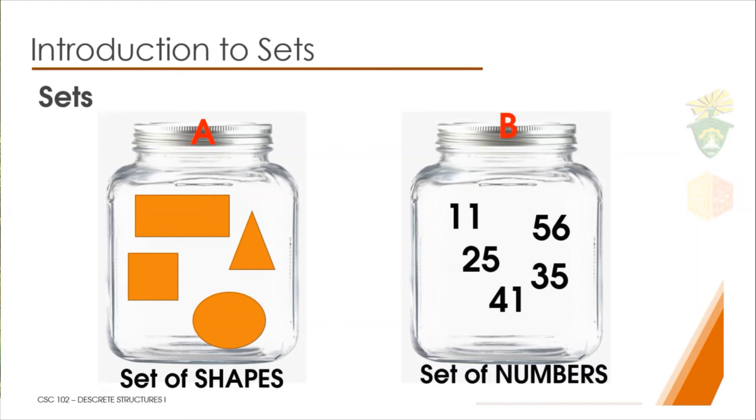With that, we now have our second set. This set B has five elements or members: the numbers 11, 25, 35, 41, and 56. As you have observed, all the elements of our set B have the same type, which is the set of numbers.